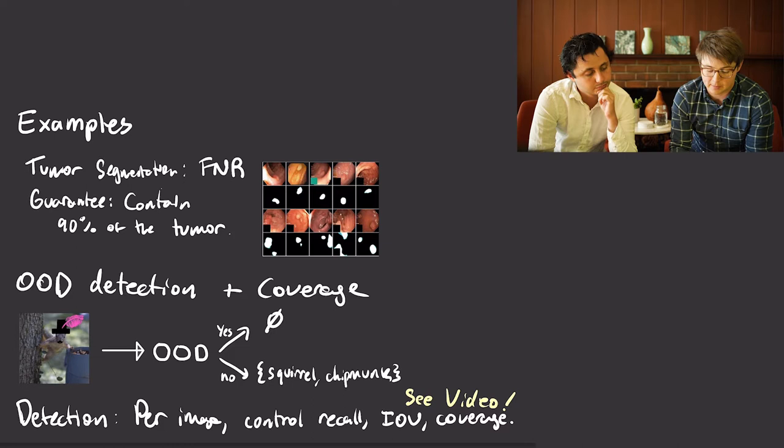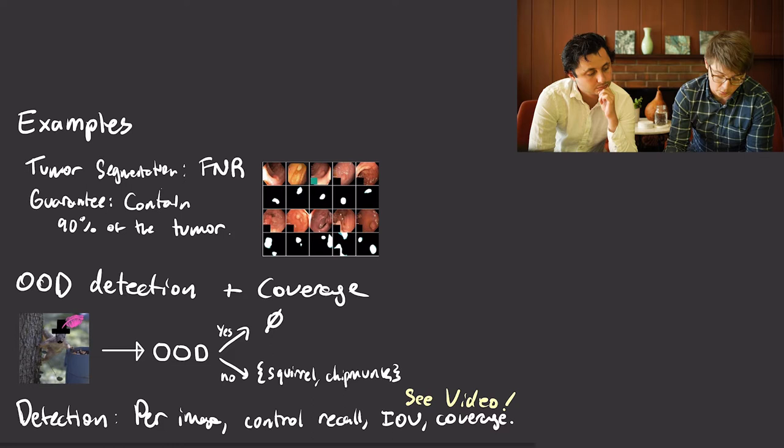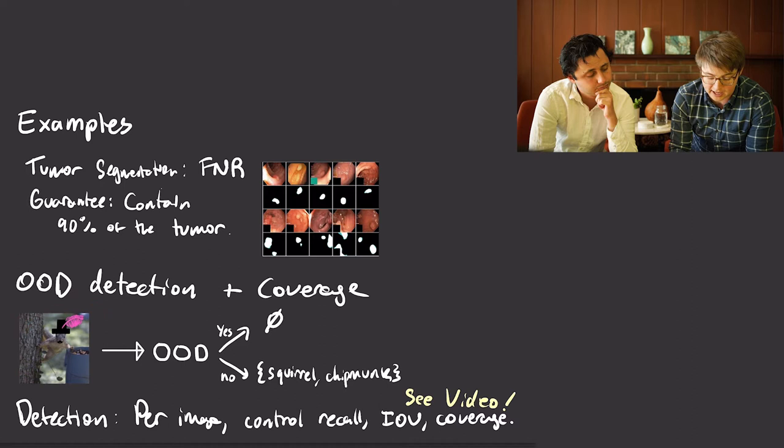In the segmentation case, I might judge that my algorithm is doing a good job if I have some control over the false negative rate. I might want prediction sets that are guaranteed to contain 90% of the tumor. As a second example of a learning problem with multiple statistical error rates, consider jointly doing OOD detection with confidence sets and coverage. For example, I might have this image of a squirrel with a cool hat and a feather — that's out of distribution from ImageNet.